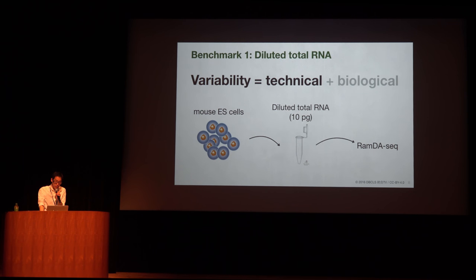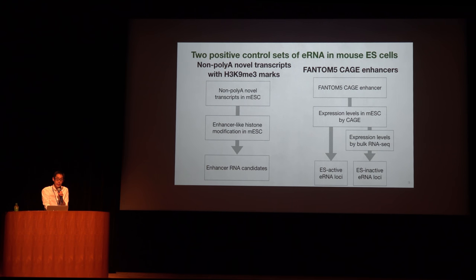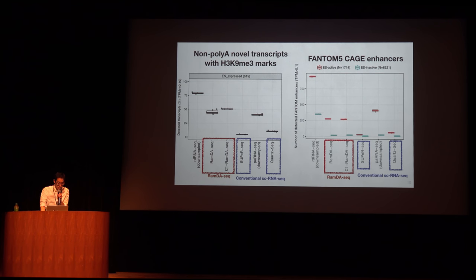Gene expression variability consists of technical and biological components. For the benchmark test of eRNA detection, we first used diluted total RNA from mouse ES cells — this experimental design evaluates only technical components of noise. We prepared two positive control sets of eRNA in mouse ES cells: one is non-poly-A novel transcripts with enhancer-like histone marks, identified using transcriptome assembly of bulk total RNA-seq and ChIP-seq data; the other is enhancers active in mouse ES cells, defined by FANTOM5 CAGE data.